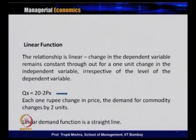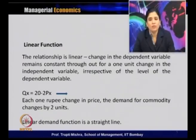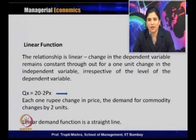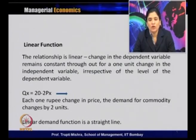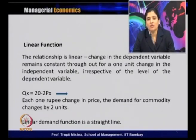In a linear function, the relationship is linear — the change in the dependent variable remains constant throughout for a one-unit change in the independent variable, irrespective of the level of the variable. Suppose we take a demand function: Qx = 20 − 2Px. This signifies that for each 1-rupee change in price, the demand for the commodity changes by 2 units, as seen from the second term, minus 2Px. When represented graphically, the linear demand function is always a straight line because the change in the dependent variable remains constant for one-unit change in the independent variable.